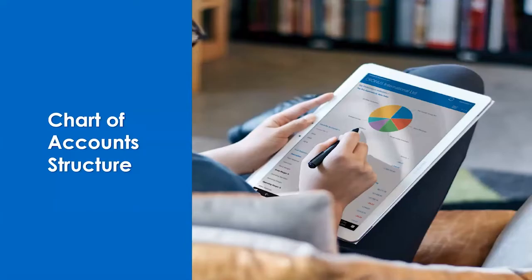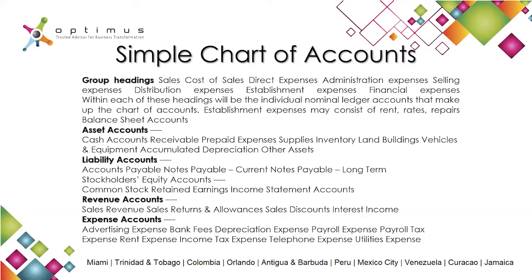This list is typically arranged in the order of appearance of accounts in the financial statements — profit and loss accounts followed by balance sheet accounts, et cetera. We have a basic structure. A simple chart of accounts will be divided into sections. We're going to have some headings first, like cost of sales or direct expenses, administration expenses, et cetera. We need to establish all of these headings with the nominal accounts that make up the chart of accounts.